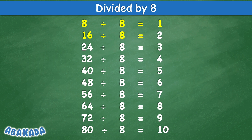Divided by 8: 16 divided by 8 equal 2, 24 divided by 8 equal 3, 32 divided by 8 equal 4, 40 divided by 8 equal 5, 48 divided by 8 equal 6, 56 divided by 8 equal 7, 64 divided by 8 equal 8.